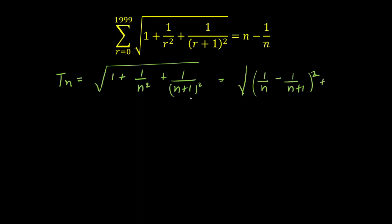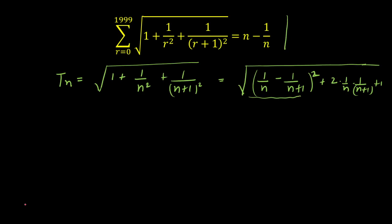When you expand (a minus b) squared, you get a squared plus b squared minus 2ab. To maintain the same original term, I need to add 2ab, that is twice of (1/n) multiplied by 1/(n+1), plus the remaining 1. Observing carefully, 1/n minus 1/(n+1) — taking LCM gives (n+1 minus n) divided by n(n+1), which equals 1 upon n(n+1).